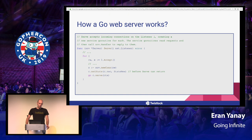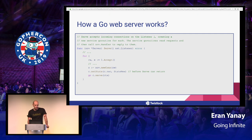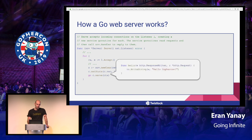Behind the scenes, the way it works is that we have the serving function, which is called once we start listening. And what it does — it's waiting for incoming connections, accepting them, and then for every incoming connection, it sets up a goroutine and calls the handler that we had previously associated. So for every incoming connection, we have a goroutine that is calling the hello handler.